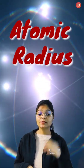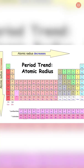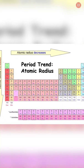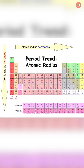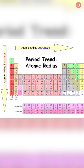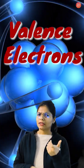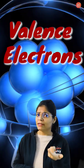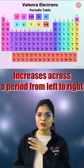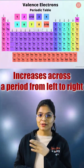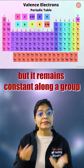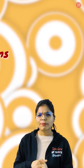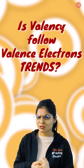Atomic Radius decreases while moving from left to right across the period, while moving down the group from top to bottom it increases. In the case of valence electrons, it increases from left to right across the period, but down the group it remains the same. But what do you follow — the valence electron?